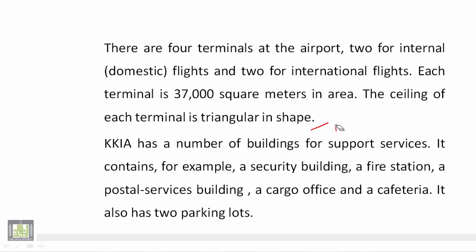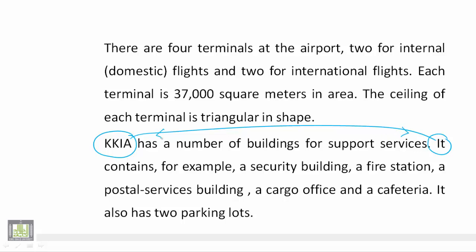Now let's find the nouns and their pronouns. The first one here is 'it contains, for example, security building, fire station, etc.' The noun that can stand in the place of this singular pronoun 'it' is obviously KKIA. So KKIA is the same as 'it'. Another example: we have another 'it' — it also refers to the airport.